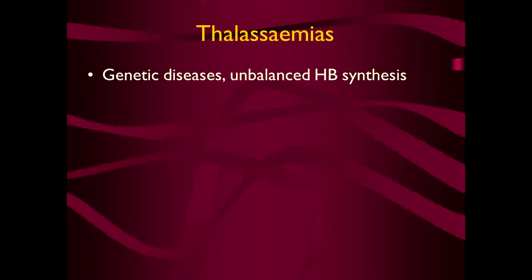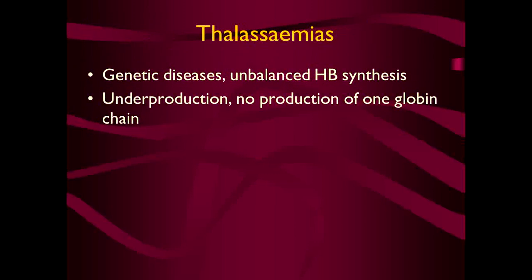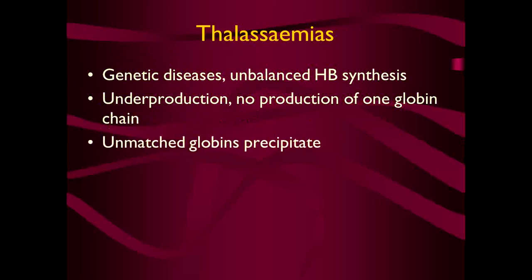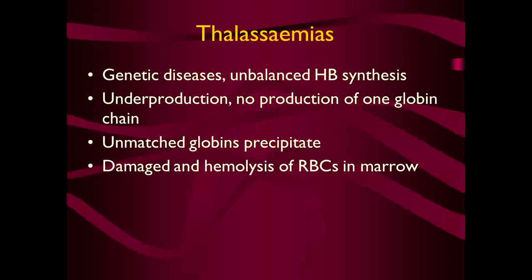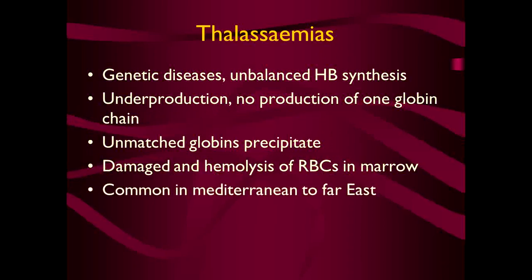Thalassemias are genetic diseases in which there is unbalanced hemoglobin synthesis, resulting in underproduction or no production of one globin chain. The unmatched alpha-globin chains precipitate and cause lysis of the RBCs in the marrow. Thalassemias are common from the Mediterranean region to the Far East.